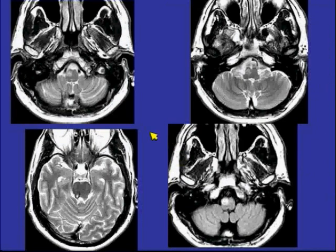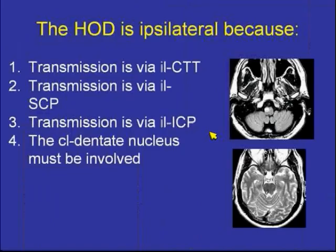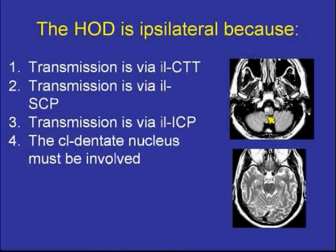Looking at this case, the patient has a cavernoma. On the FLAIR scans and T2-weighted scans, the next question is: the hypertrophic olivary degeneration is ipsilateral to the lesion — why? Is it because transmission is via the ipsilateral central tegmental tract, the ipsilateral superior cerebellar peduncle, the ipsilateral inferior cerebellar peduncle, or that the contralateral dentate nucleus must be involved? Let's start the timer — why is this olive hypertrophic and bright ipsilateral to this lesion?